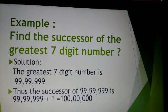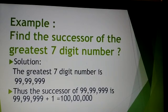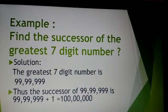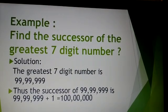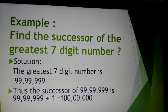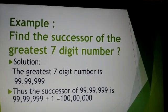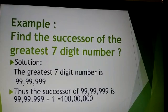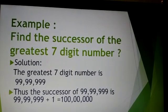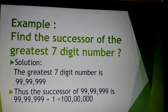Let us take an example. Find the successor of the greatest 7-digit number. Solution: the greatest 7-digit number is 99,99,999. Thus, the successor of 99,99,999 is 99,99,999 plus 1, which is equal to 1 crore.